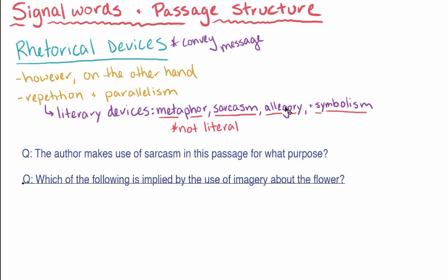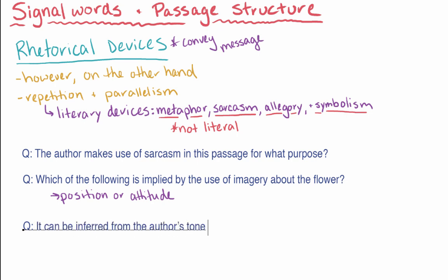Similar to word choice, literary devices and figures of speech like metaphors can also reveal an author's position or attitude on a topic. They can color the author's message by using more or less pleasing examples. For example, comparing a political candidate to Robin Hood is likely to suggest a more positive view of the candidate than comparing the candidate to Hitler. An example of a question that asks you about this idea is, It can be inferred from the author's tone that they believe which of the following?